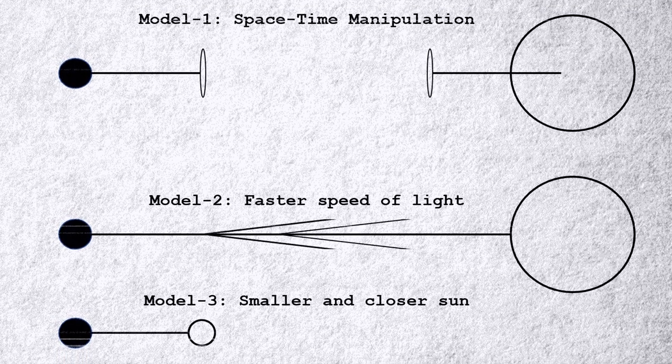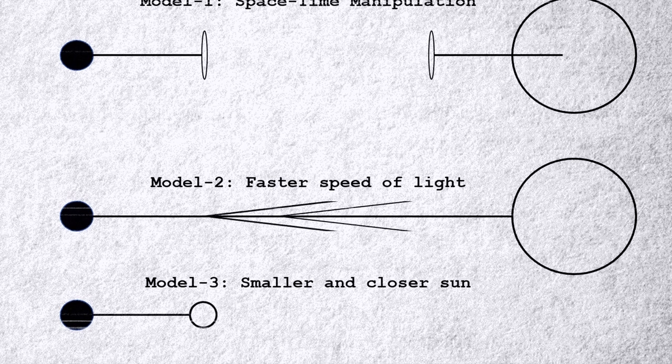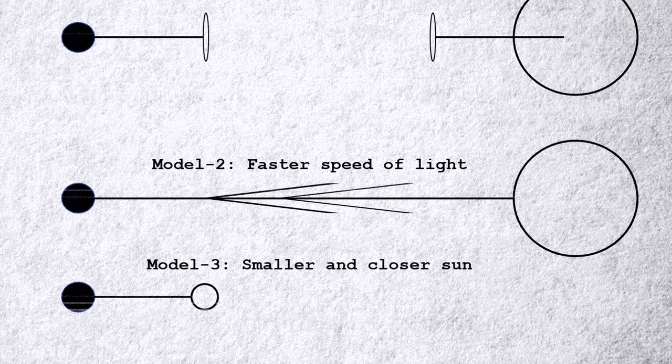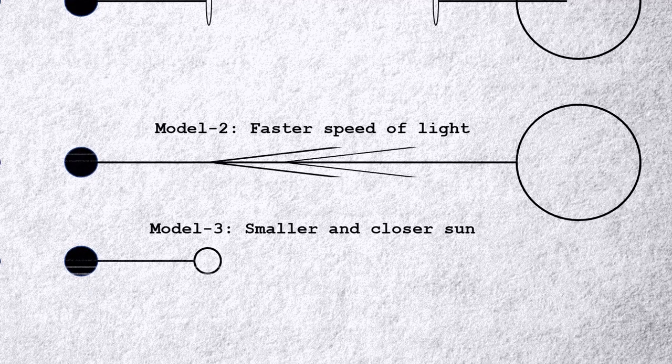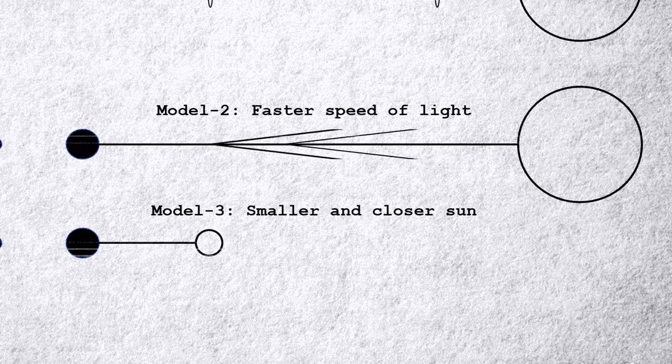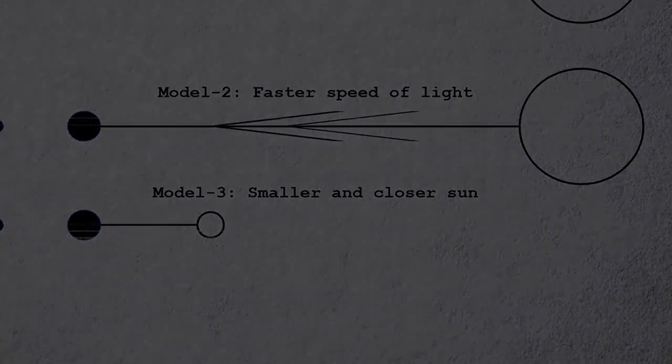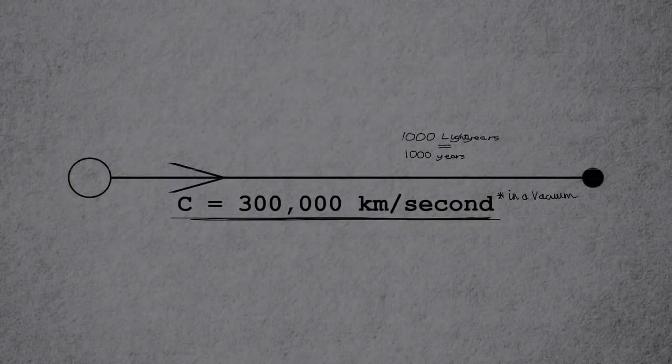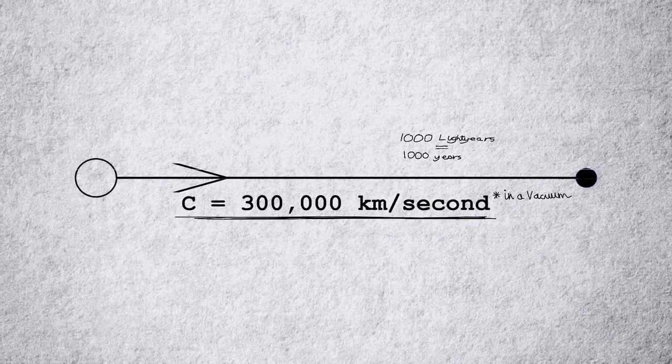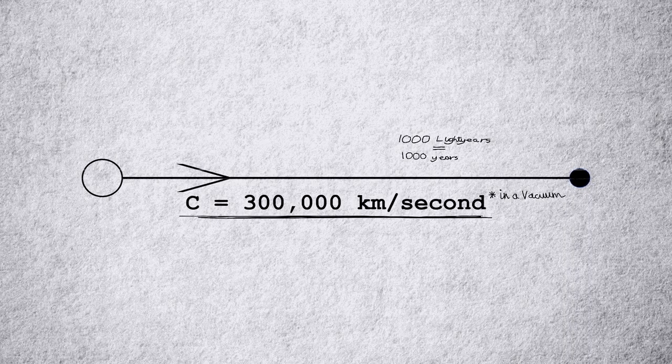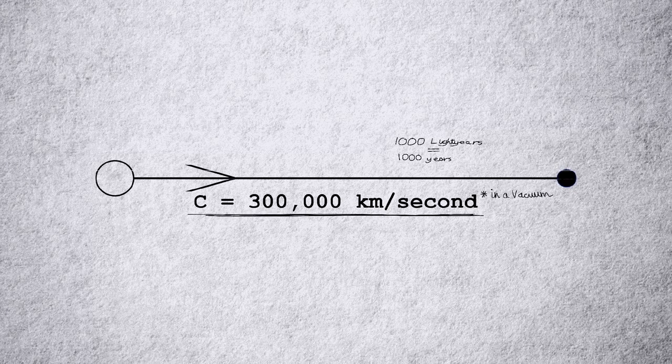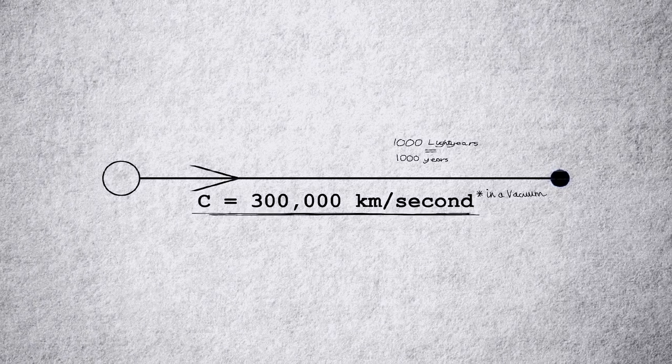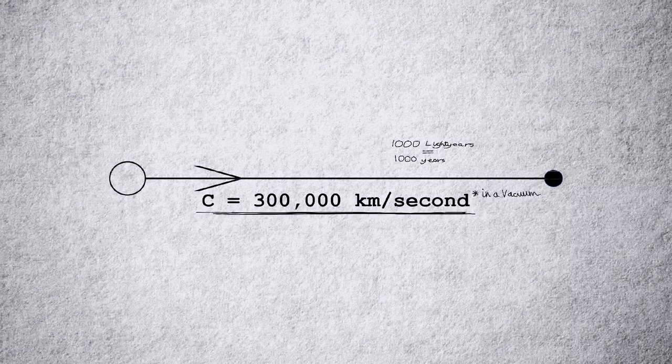Either the speed of light is much faster in the MLP universe, or the Sun must be smaller and closer to the planet than in our universe. So which is it? This is where I'm stuck. Knowing whether Equestria's speed of light is the same or faster than ours would have a huge impact on what we know of the MLP universe, but again, it's hard to really confirm anything. So where exactly do we go from here?